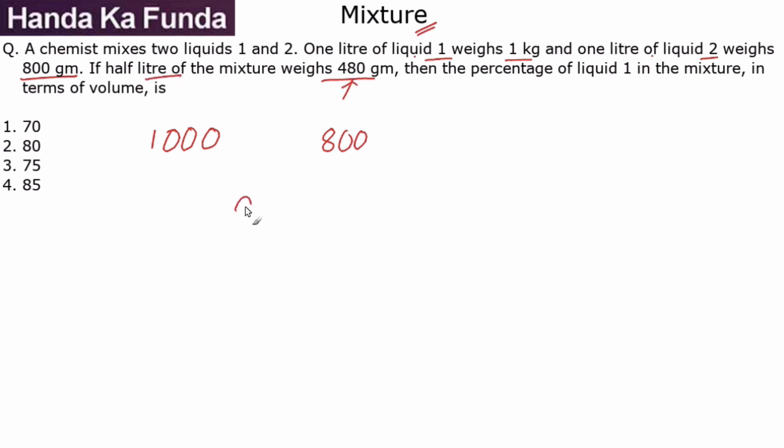Or 960 grams in 1 liter. So you are mixing type A, which is 1000 grams per liter, with 800 grams per liter, and the resultant is 960 grams per liter. In what ratio should you mix them? Let's apply allegation.